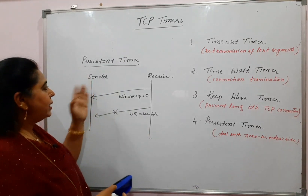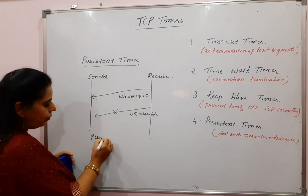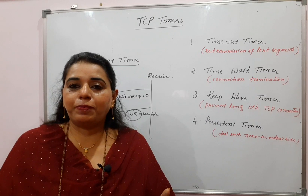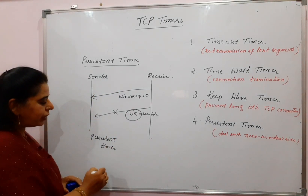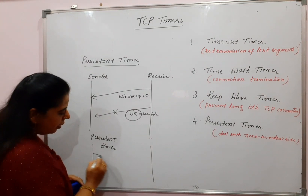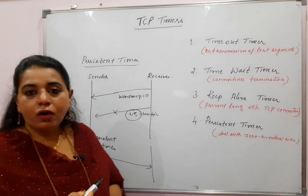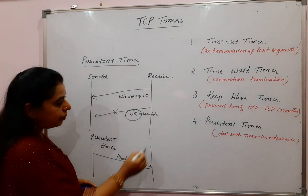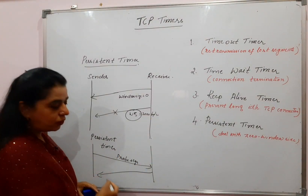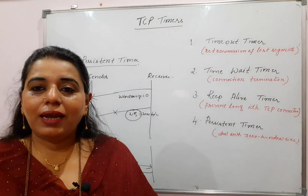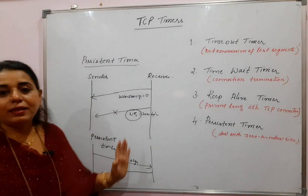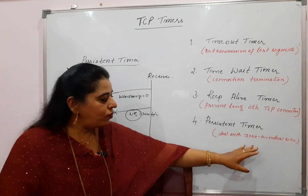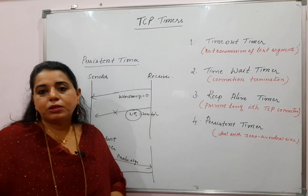To avoid this deadlock, the sender sets a timer called the persistent timer. Before this timer expires, it should receive the updated window size from the receiver. If it is not received before the timer expires, then the sender will send a probe segment — some dummy data of one single byte — to the receiver. Once the probe segment is received, the receiver will acknowledge it, and in that acknowledgement it will include the updated window size. Once the sender receives that updated window size, it will start sending data. This way, the deadlock and the zero window size problem are avoided, and that is why the persistent timer is used.